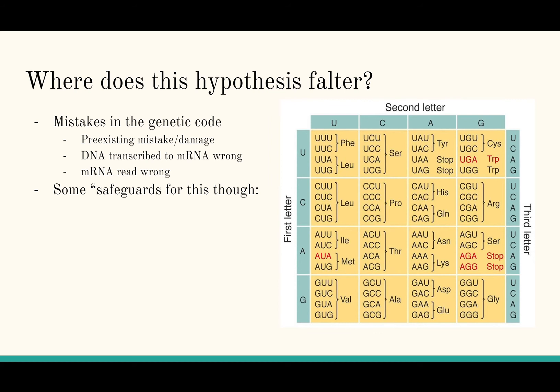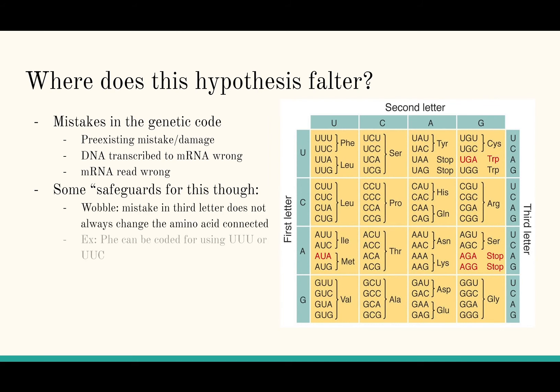Thus it may code for the wrong amino acid. This can be prevented by wobble. Wobble describes the process by which an alteration to the third letter of a codon results in coding for the same amino acid. An example of this is phenylalanine, which can be coded for by both UUU and UUC.